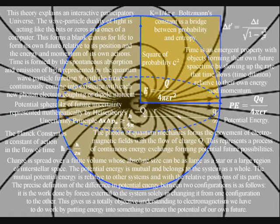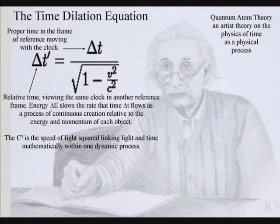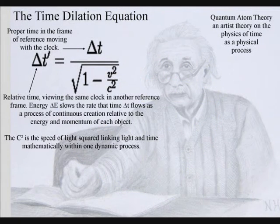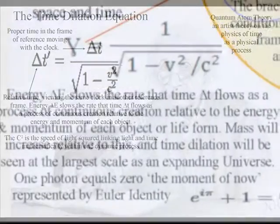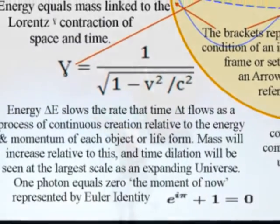Within this process, electromagnetism is the main force within the universe. This is because such a theory links the photon of quantum mechanics with the time dilation of Einstein's relativity, giving us what could be called quantum gravity.